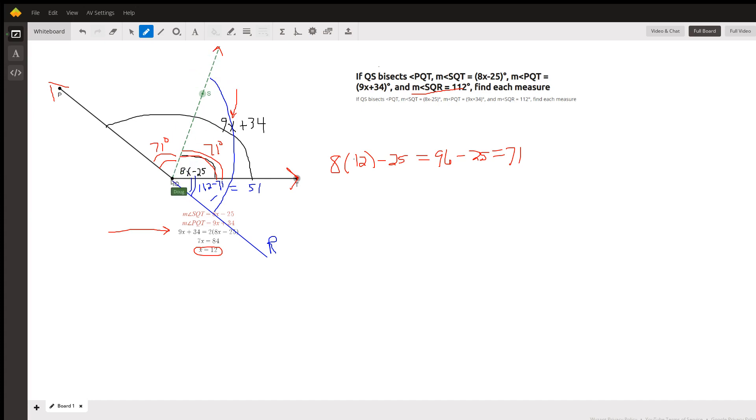And you could have also put ray QR over here, but you'd get the same answer because you'd have 71 plus 51. That gives you the measure of angle SQR: 71 plus 51 equals 112.